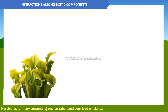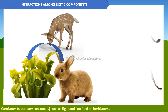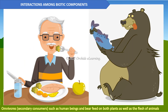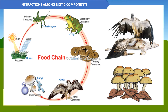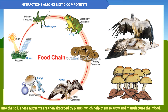Plants (producers) utilize the sun's energy and manufacture their own food through photosynthesis. Herbivores (primary consumers) such as rabbits and deer feed on plants. Carnivores (secondary consumers) such as tigers and lions feed on herbivores. Omnivores (secondary consumers) such as human beings and bears feed on both plants and the flesh of animals. Scavengers and decomposers feed on dead plants and animals and release trapped nutrients into the soil, which are then absorbed by plants.